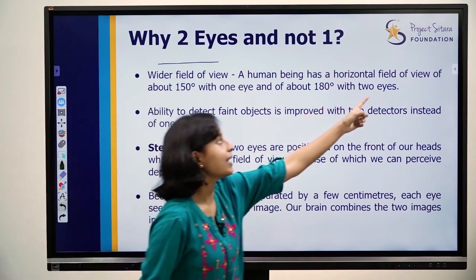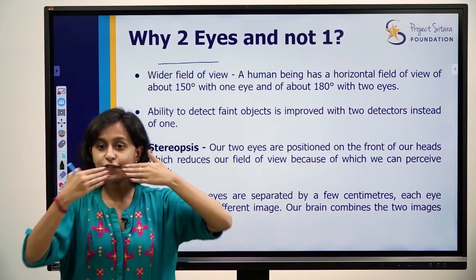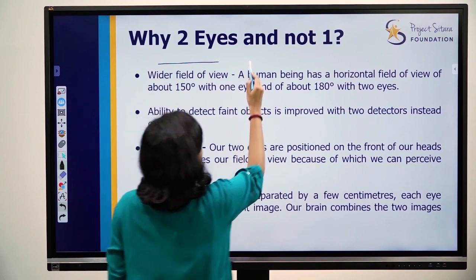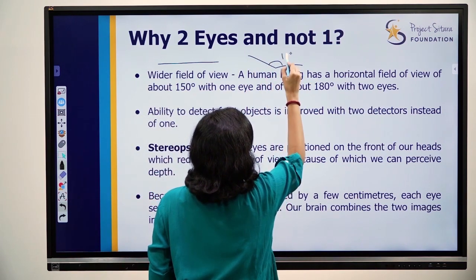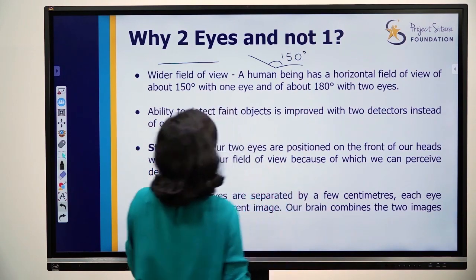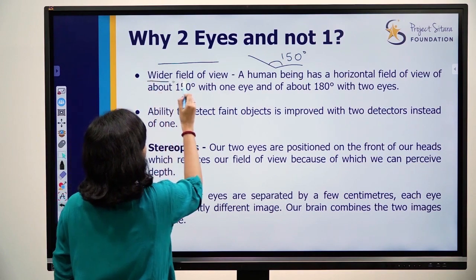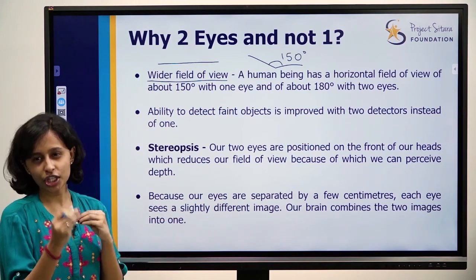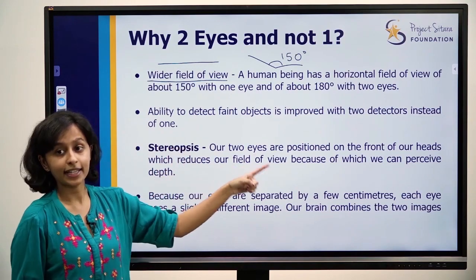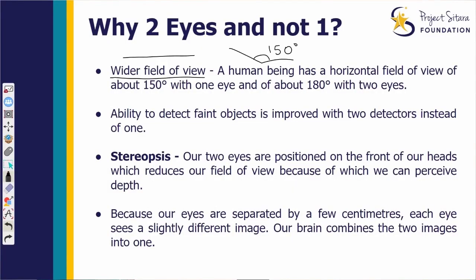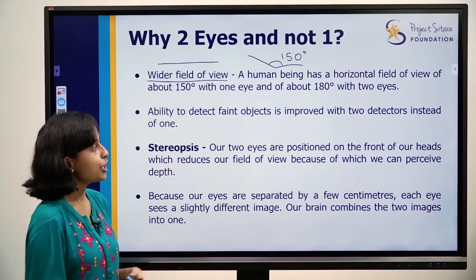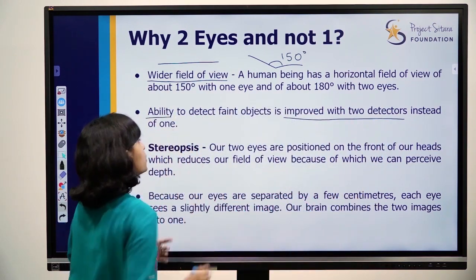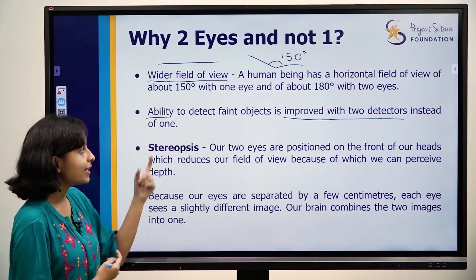180 degrees is a field of view. If you look straight, we have 180 degrees as a straight line. You have around 150 degrees as a field of view. So the first reason is wider field of view — the ability to detect and the ability to improve will improve.